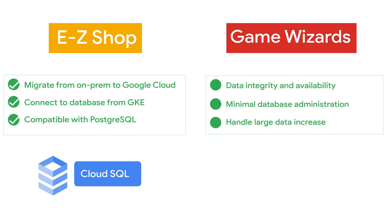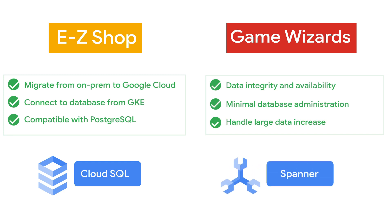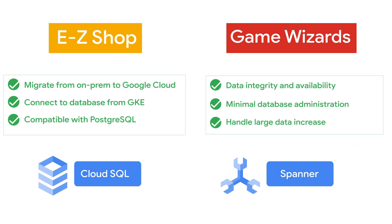On the other hand, Cloud Spanner is a good fit for Game Wizards. They need a globally distributed relational database that can handle large amounts of data for a successful game launch. With Spanner, there is no fixed size limit, so it can grow as the business grows.